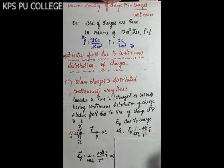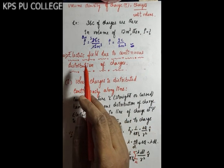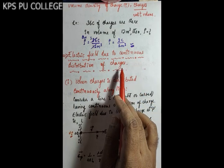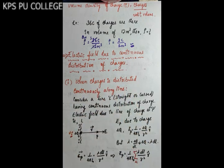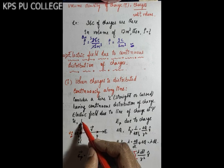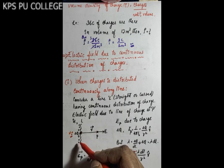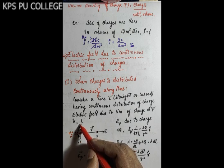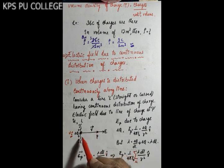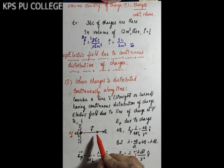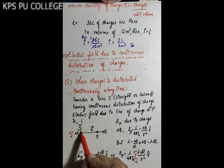We will now discuss the electric field due to continuous distribution of charges. The first type is when the charge is distributed continuously along a line — straight or curved, it makes no difference. There is a continuous charge distribution with positive charges distributed over this length. We need to find the electric field due to this line at point P.